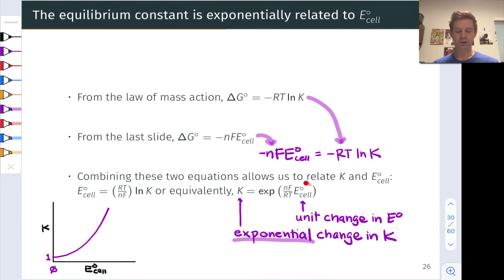So this shows, for instance, that a unit change in E°_cell causes an exponential change in the equilibrium constant. So small changes in the voltage of a galvanic cell lead to huge swings in the value of K. And here's a graph that just depicts this, with the value of K on the y-axis and E°_cell on the x-axis.